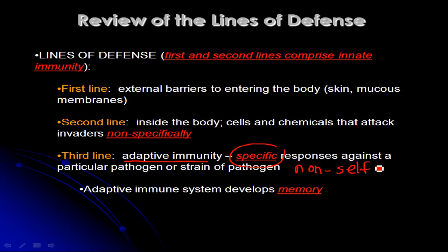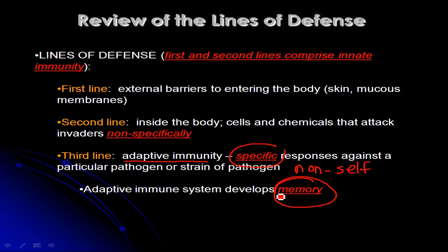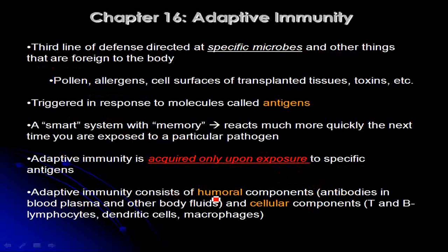Another key feature of adaptive immunity is that the adaptive immune system develops memory. It's able to remember that you have been infected with a particular pathogen in the past, and the next time you get infected with it, that adaptive immune response is going to occur much more rapidly and hopefully get rid of the invading organisms before they're able to make you sick.